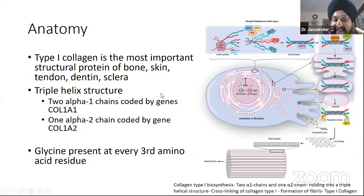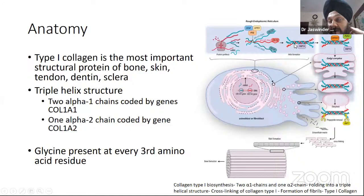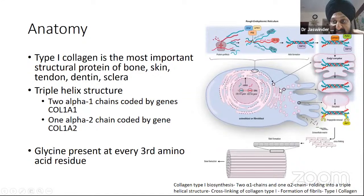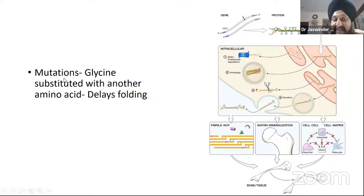Type 1 collagen consists of two alpha-1 chains coded by the COL1A1 gene and one alpha-2 chain coded by COL1A2. In the rough endoplasmic reticulum there is gradual folding of these collagen chains, which are extruded out and through various processes form a fibril — the basic composition of bone and other structures. Glycine is present at every third amino acid residue. In osteogenesis imperfecta, a mutation in these genes causes glycine to be substituted by another amino acid.